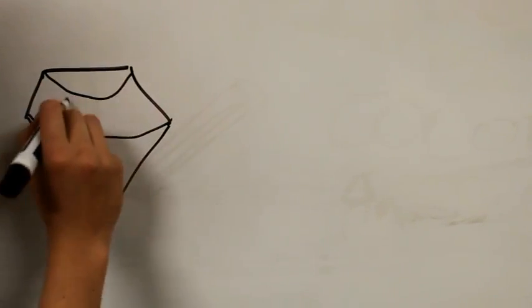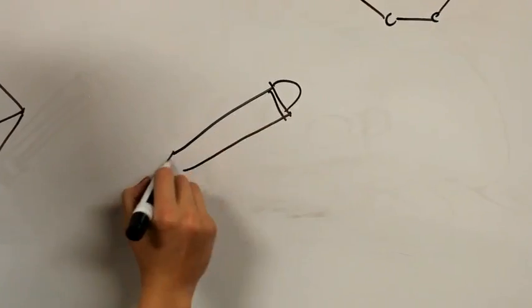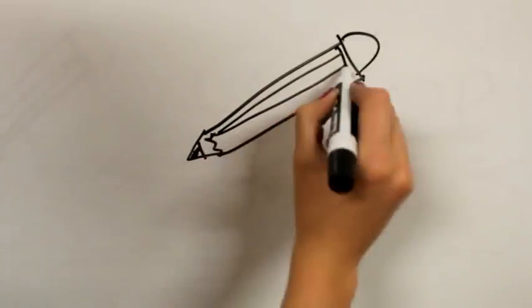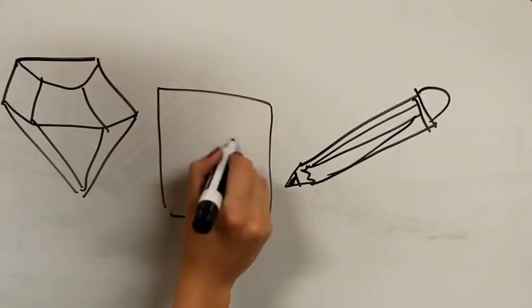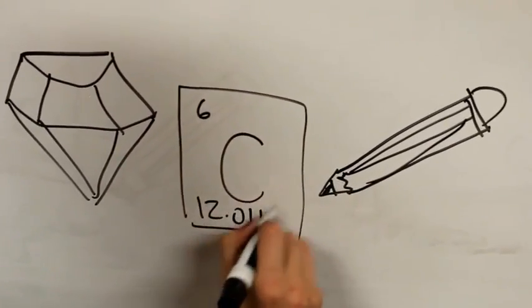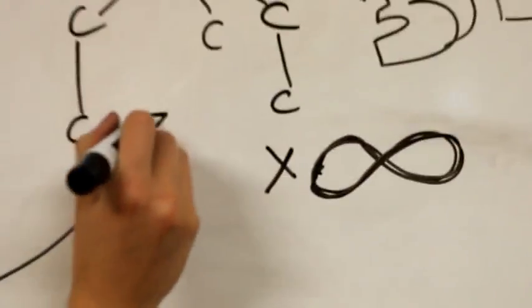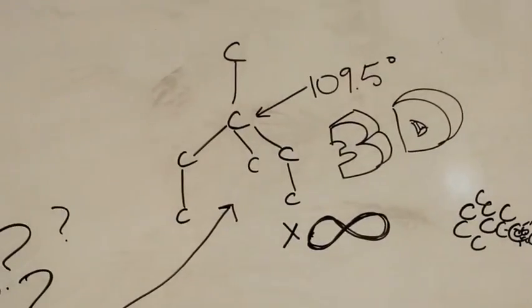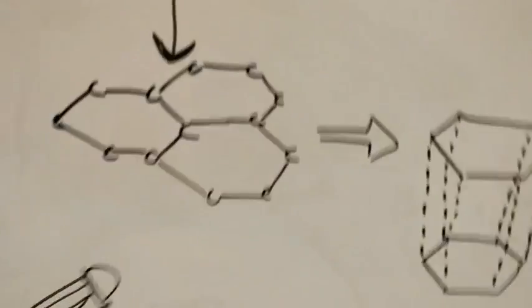Now you have learned why diamond and graphite are completely different from each other, even though they are made up of the same thing. These differences in their physical properties, such as color and hardness, and other chemical properties are all due to the different arrangement of carbon atoms. Once again, here is what the diamond structure looks like. And here is what the structure of graphite looks like.